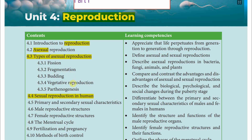These are the types of Asexual Reproduction. Then at point 4.4 we will talk about Sexual Reproduction in humans specifically. So 4.3 and 4.4 are the main modes of reproduction — Asexual Reproduction and Sexual Reproduction.